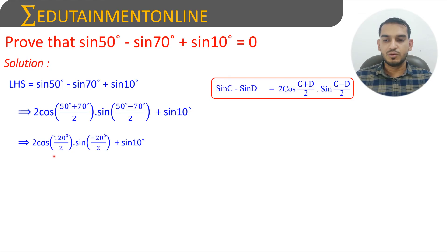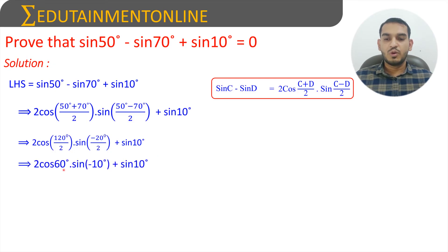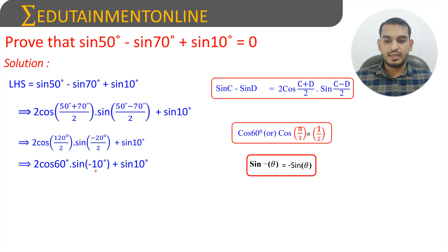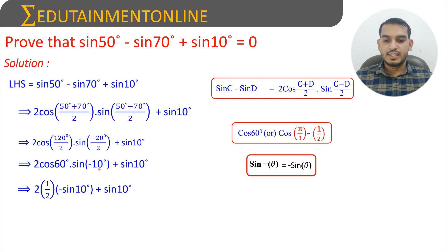So we can write it as 2 cos 60 degrees into sin of minus 10 degrees, plus sin 10 degrees. We know that cos 60 degrees is equal to 1 by 2, and sin of minus theta is minus sin theta. So we write 2 into 1 by 2 into minus sin 10 degrees, plus sin 10 degrees.